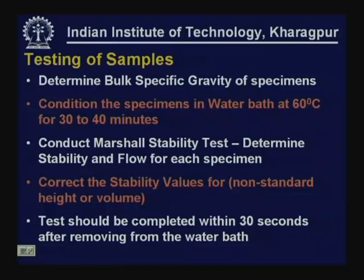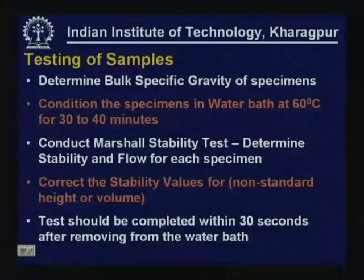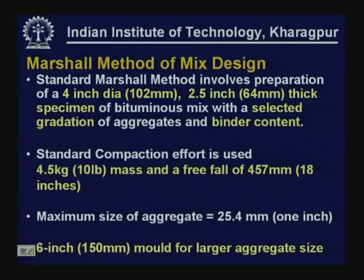The standard Marshall method involves preparing a 4-inch diameter (102 mm) specimen approximately 64 mm (2.5 inches) in height, with the selected aggregate gradation and binder content. The standard compaction effort is applied using a hammer of 4.5 kg (10 pounds) with a free fall of 457 mm (18 inches). The maximum size of aggregate that can be used in this 4-inch diameter specimen is 1 inch or 25.4 mm.